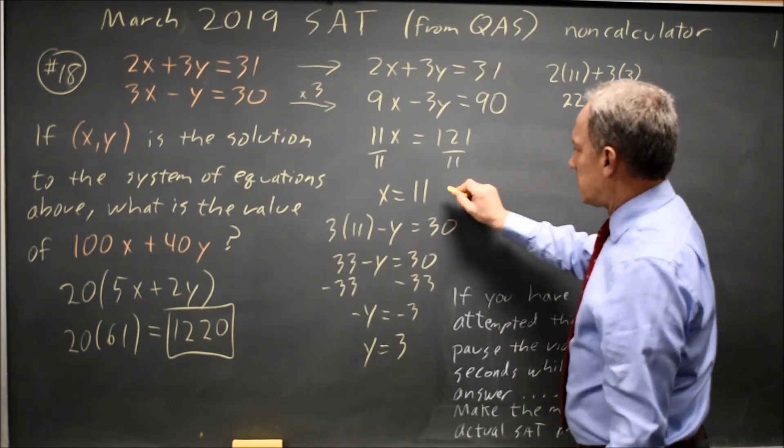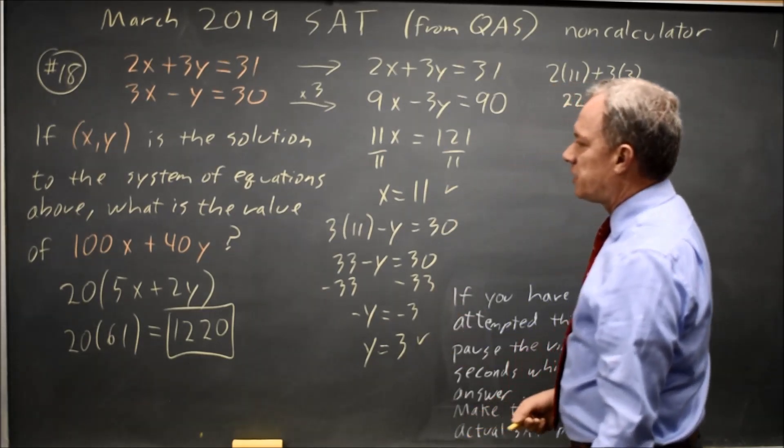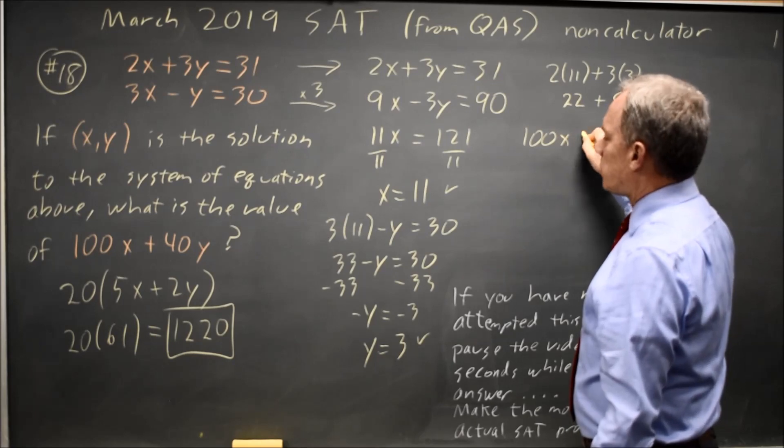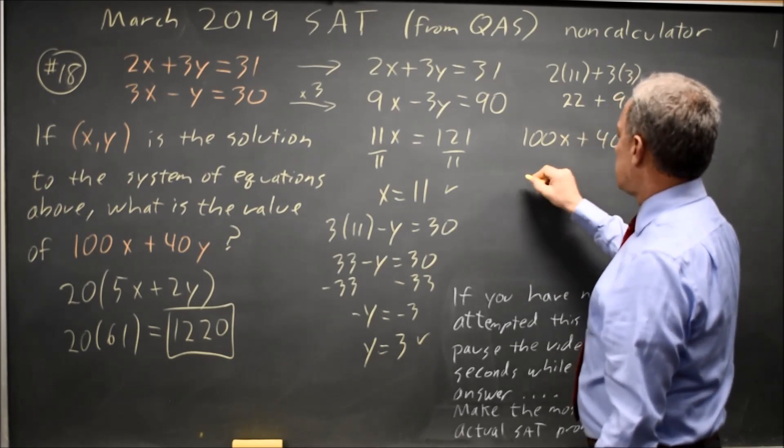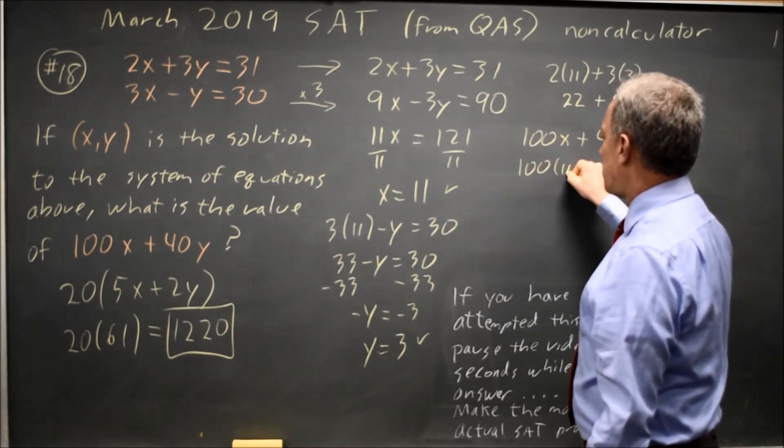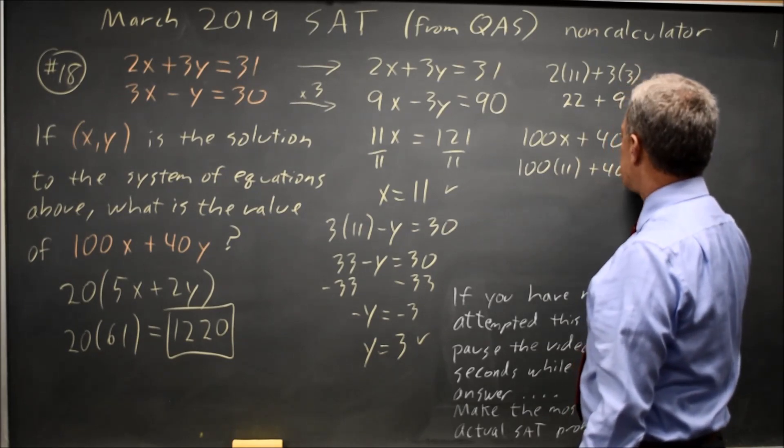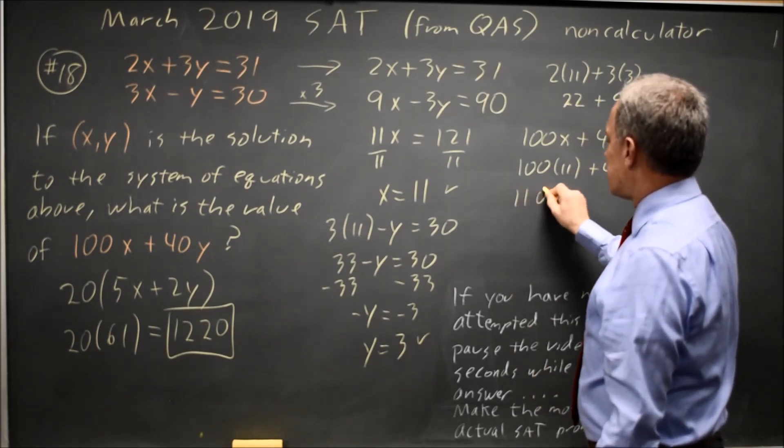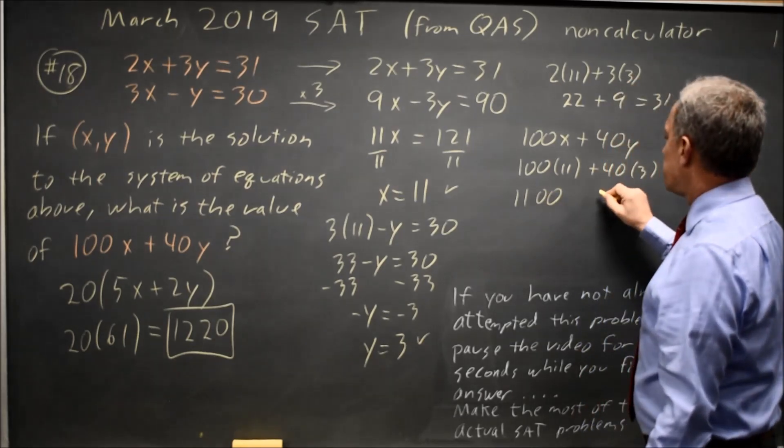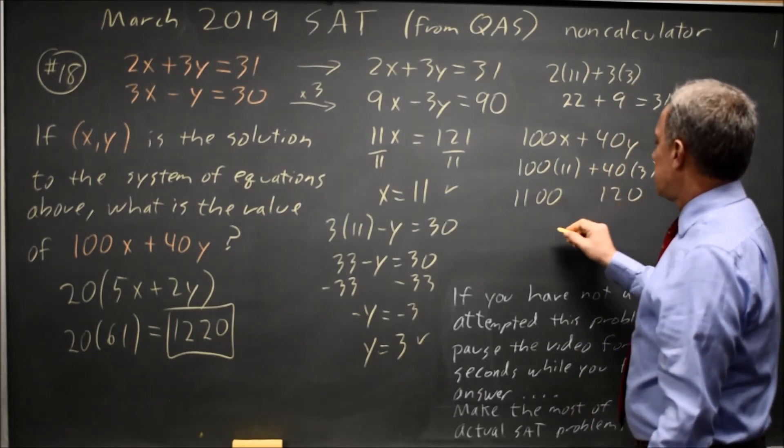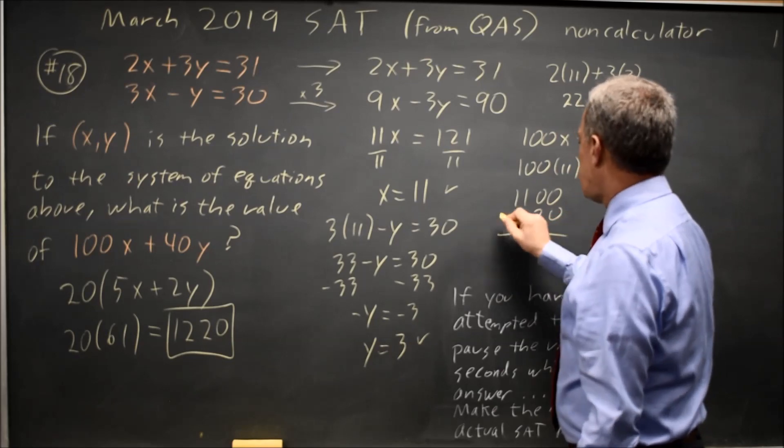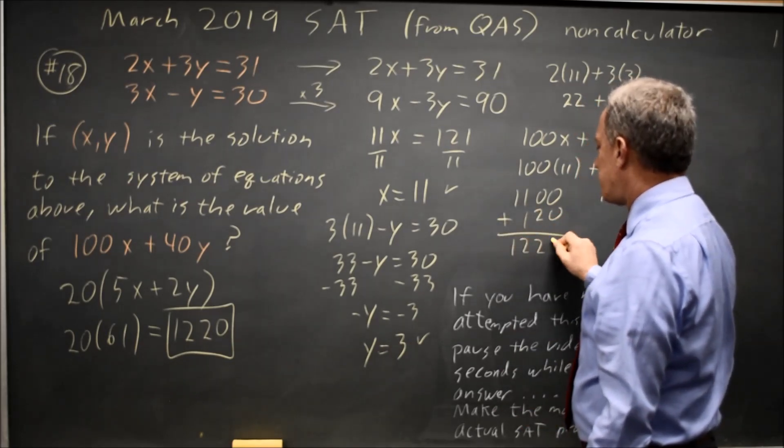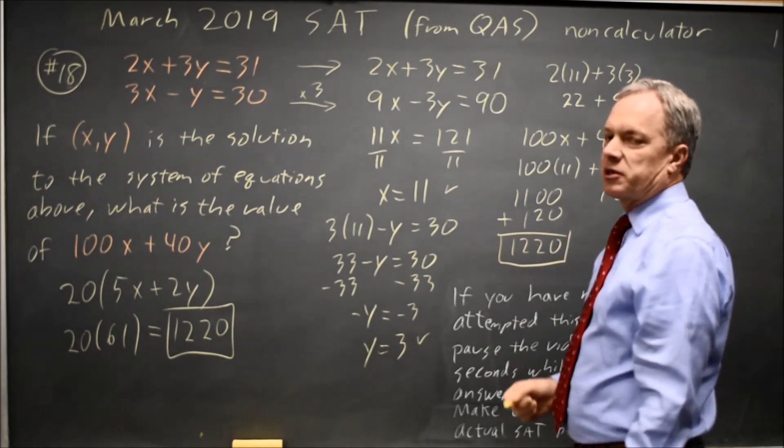X equals 11. Y equals 3 is correct. And now I want 100X plus 40Y, which is 100 times 11 plus 40 times 3. 100 times 11 is 1100. 40 times 3 is 120. Adding because they want 100X plus 40Y, that is 1220, which is the same answer I got with the trick.